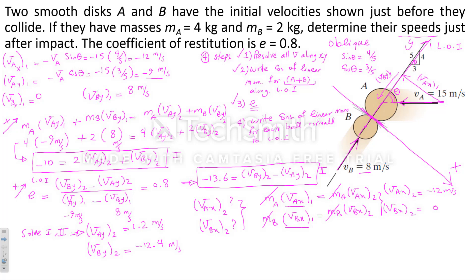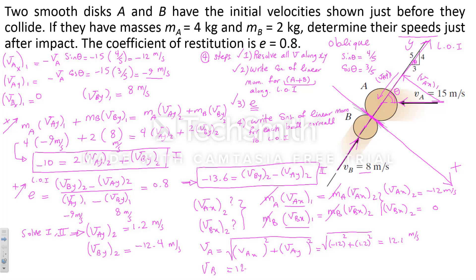To find the magnitude of velocity of A, take the square root of the sum of squares of x and y components: sqrt((−12)² + (1.2)²) = 12.1 meters per second. Doing the same for ball B gives 12.4 meters per second. These are the velocity magnitudes just after the impact.